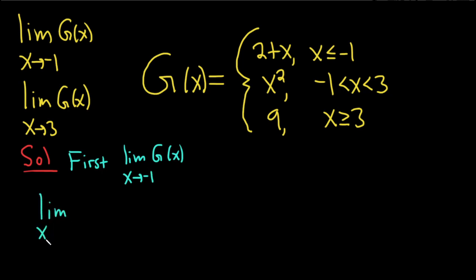We'll start by taking the limit as x approaches negative 1 from the left of g of x. So we have to figure out what g of x is in this case. Because we're approaching negative 1 from the left, here's a little picture on the top right, here's negative 1 and here's x. You notice from the picture that if you approach from the left, x is actually less than negative 1.